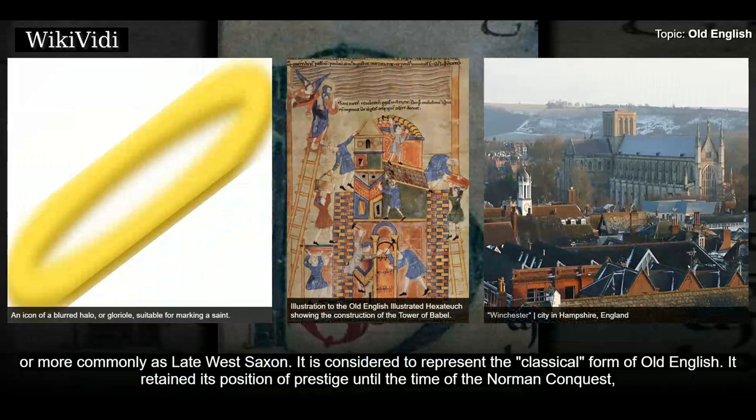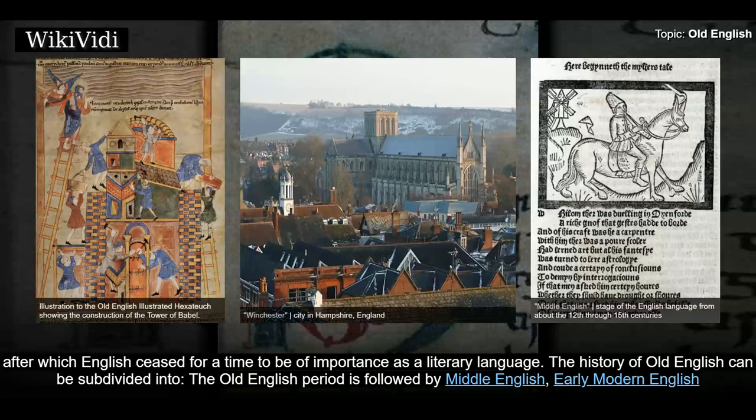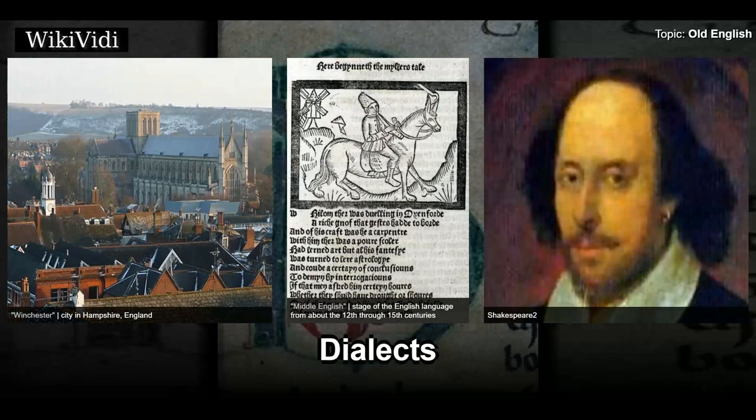Late West Saxon is considered to represent the 'Classical' form of Old English. It retained its position of prestige until the time of the Norman Conquest, after which English ceased for a time to be of importance as a literary language. The Old English period is followed by Middle English, Early Modern English, and finally Modern English.